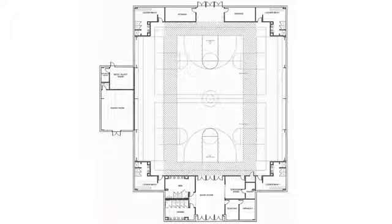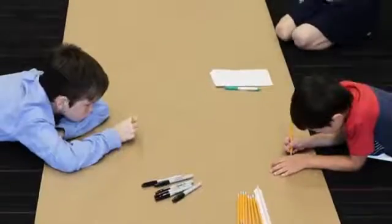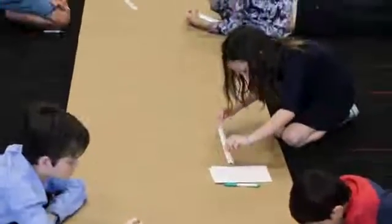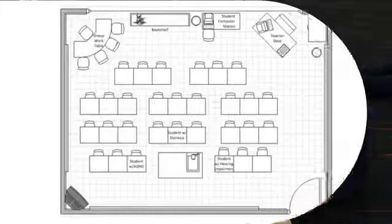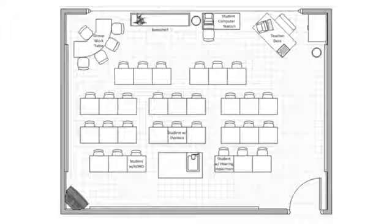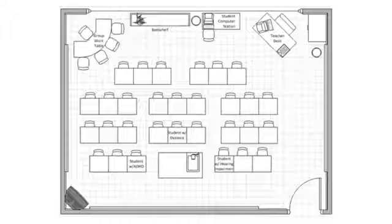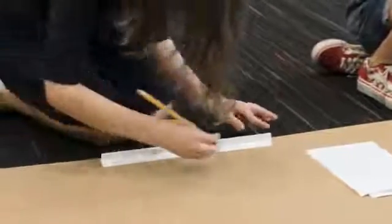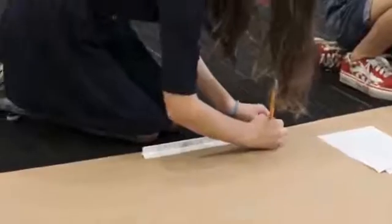A floor plan is like a diagram with more precise graphics and measurements called dimensions. Architects use floor plans to show how a building is to be constructed. A floor plan is a drawing that shows exact sizes and shapes of spaces. Floor plans are drawn using a special ruler called a scale.